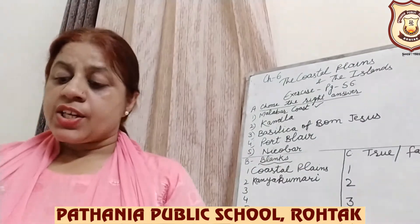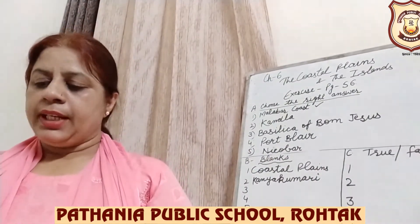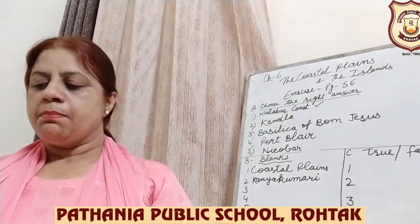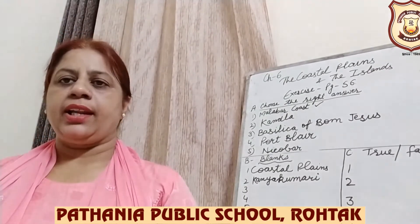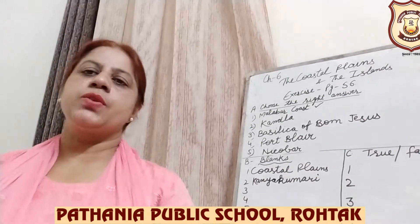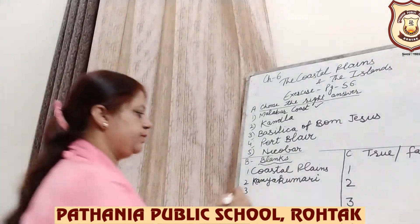Number 3: Dash are small saltwater bodies separated from the sea by rocks and sand. The answer is 'lagoons.' You have to write 'lagoons.'